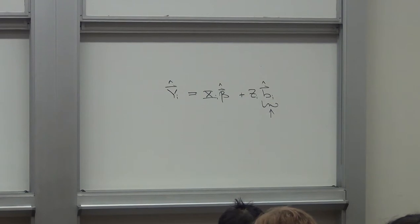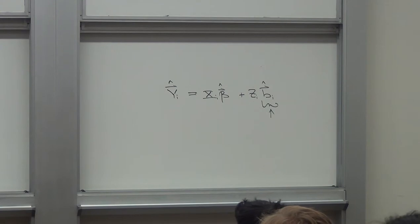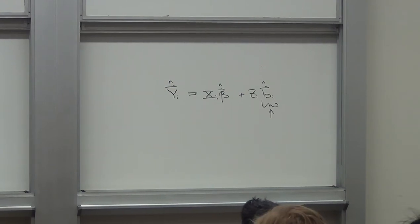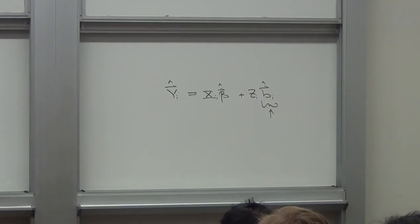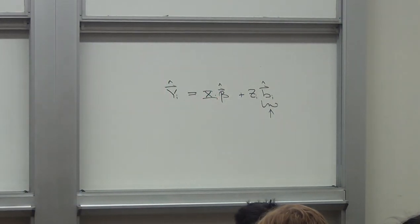If I estimated each individual's parameters separately, I'd be doing OLS on each individual unit — no data reduction, no borrowing of information. That's inefficient. So the structure we put on the model — assuming B-I has mean zero — gives us massive data reduction. The key question is: how do I obtain a meaningful estimate of the beta-I's so I can do prediction at the cluster level?